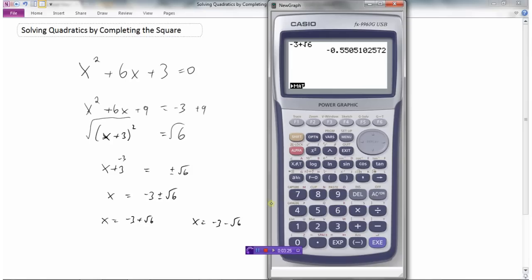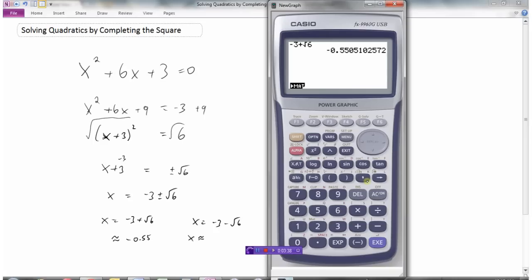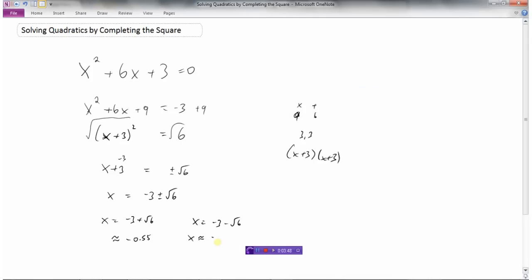So negative 0.55. So x is now approximately equal to negative 0.55, or x is approximately negative 3 minus the square root of 6 is negative 5.45 approximately. But it is best to leave your answers as exact values, unless the question specifically says give a two decimal approximation to the question.